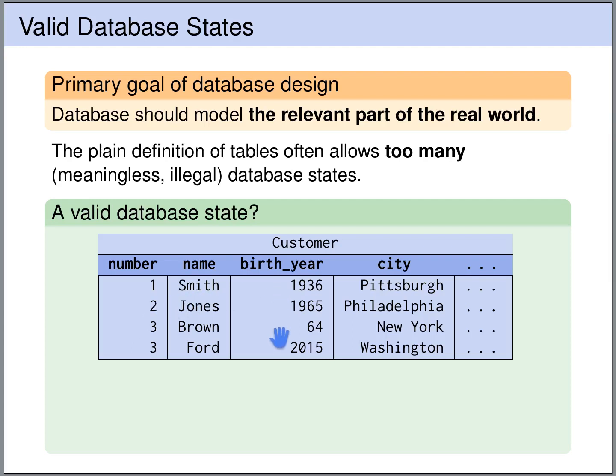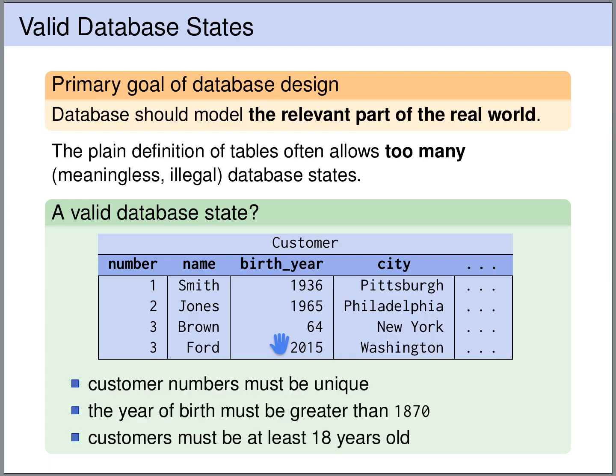Also, the year is entered in different formats. We would like to have a constraint that enforces that the year is entered in a uniform format. And you can think of many more useful constraints — for instance, we might want to express that customers are at least 18 years old, or that a city is a real city that exists, and so on.